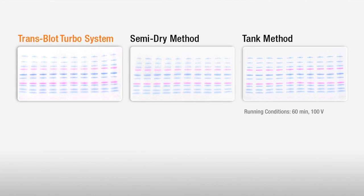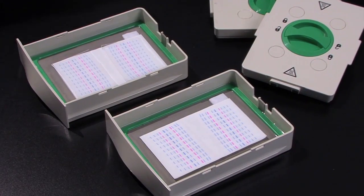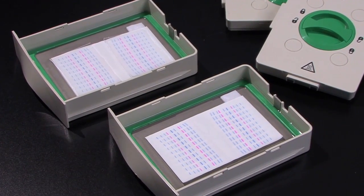In only three minutes, the Trans-Blot Turbo system produces high-quality protein transfers equivalent to the slower traditional methods. In addition, the Turbo system can transfer up to four mini-gels in a single run.